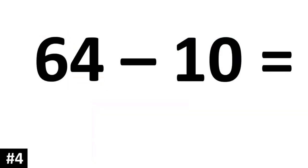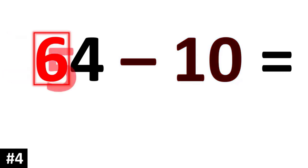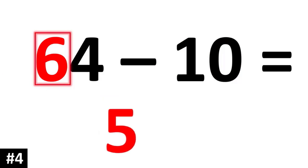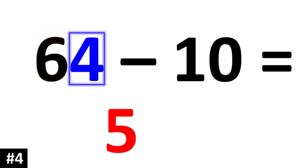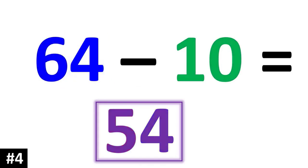How about 64 minus 10? Subtracting by 10 means the tens digit is going to go down by 1. So that 6 is going to go down to 5. The ones digit stays the same, so 64 minus 10 is 54.